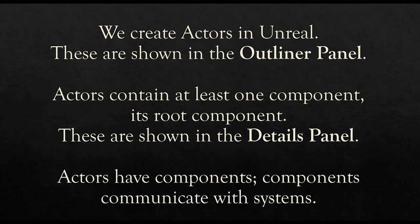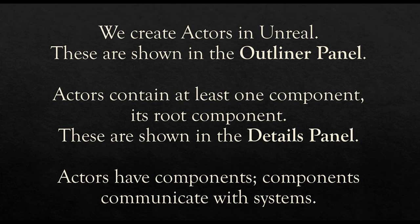To sum up: we create actors in Unreal, which are always available in the Outliner panel. Actors contain at least one component — their root component — shown in the Details panel. We click on an actor in the Outliner and view its details in the Details panel. Unreal has many different systems — common processes like drawing to the screen, processing input, and managing sound. We create actors, add components, and those components communicate with systems. This lets us add only what we need as part of development within Unreal 5. Thanks for watching.